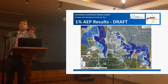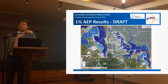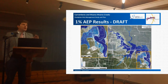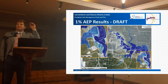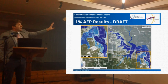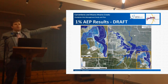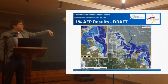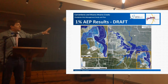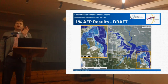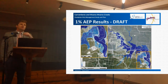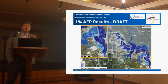Having established that our models do a reasonable job of emulating the June 2013 event based on these flood marks, we can then put the statistical — the design — rainfall into them. We can get the 1% AEP result, which is the same as the 100-year, and start to look at these. But as I say, these are just draft, so I'm going to go through these reasonably quickly today. These might actually change.